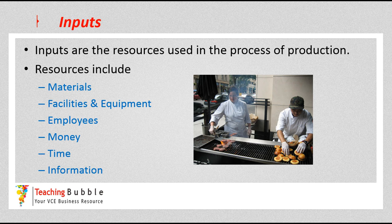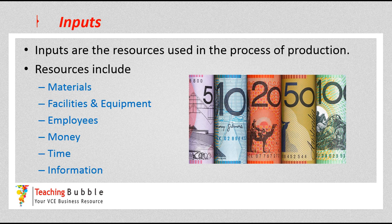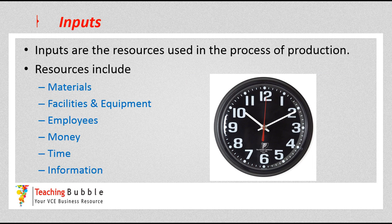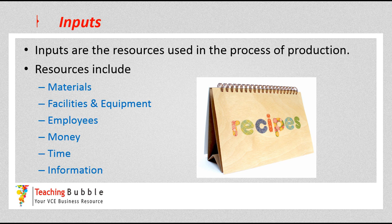Then there are the employees involved — that could be the people on the cash register or the people on the grills out the back. Money is a really important resource so that we can actually buy our materials. Time is also crucial because it's something we can't get more of; we need to make really efficient use of time — we don't want someone ordering a burger and getting it an hour and a half later. And then any information, such as recipes or information on our particular customers. All those are resources that help us actually produce our product.